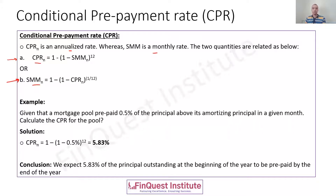To demonstrate this with a simple calculation: suppose a mortgage pool prepaid 0.5% of principal above its amortizing principal in a given month. To calculate the CPR for this pool, we use the formula: CPR = 1 − (1 − 0.005)^12. This gives us 5.83%. The interpretation is that we expect 5.83% of the principal outstanding at the beginning of the year to be prepaid by the end of the year.